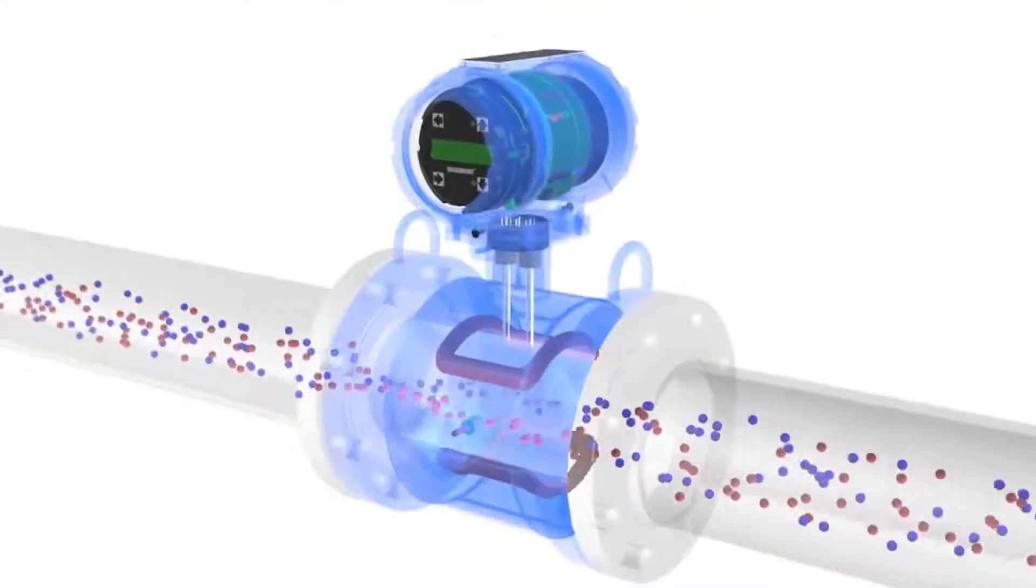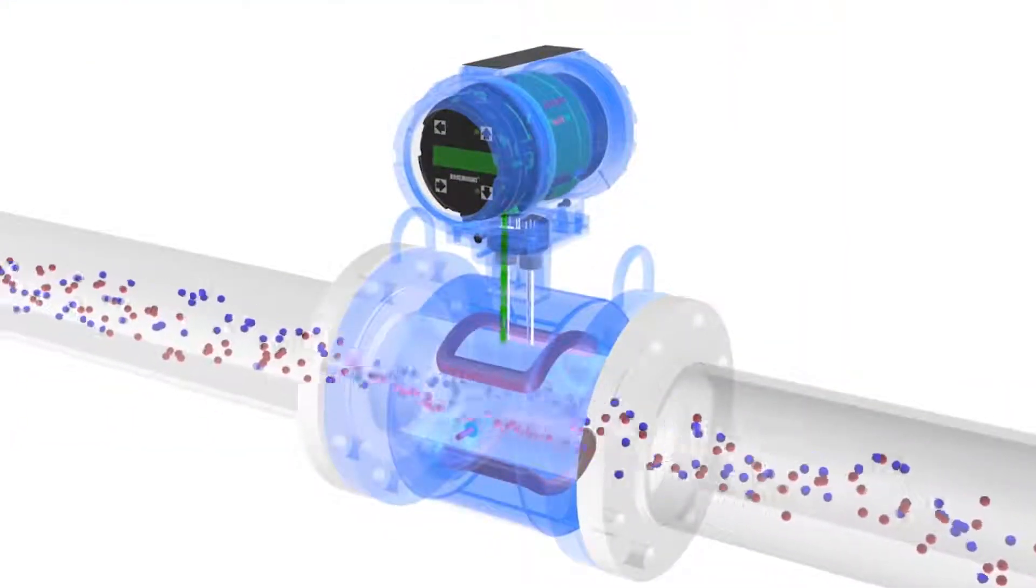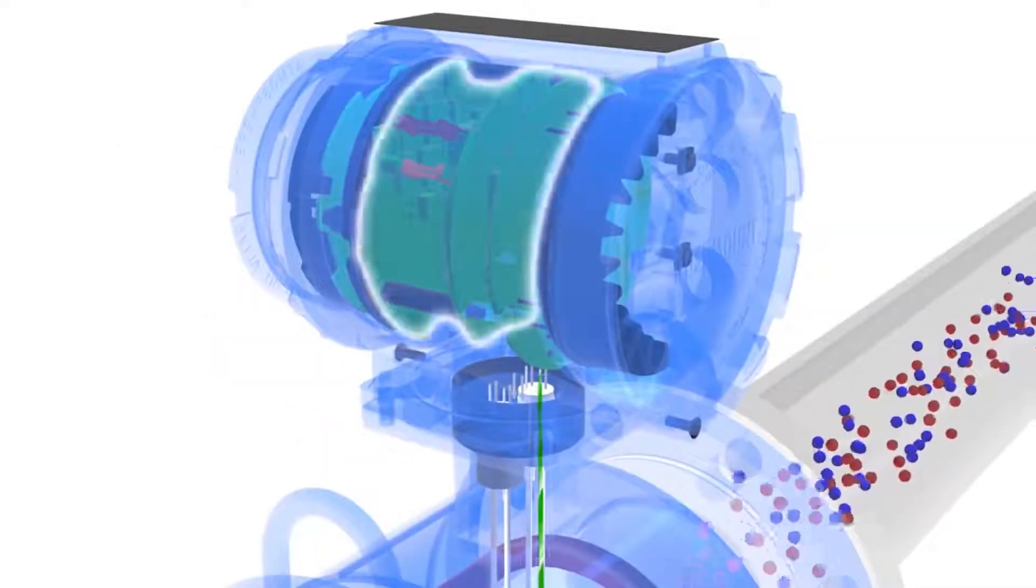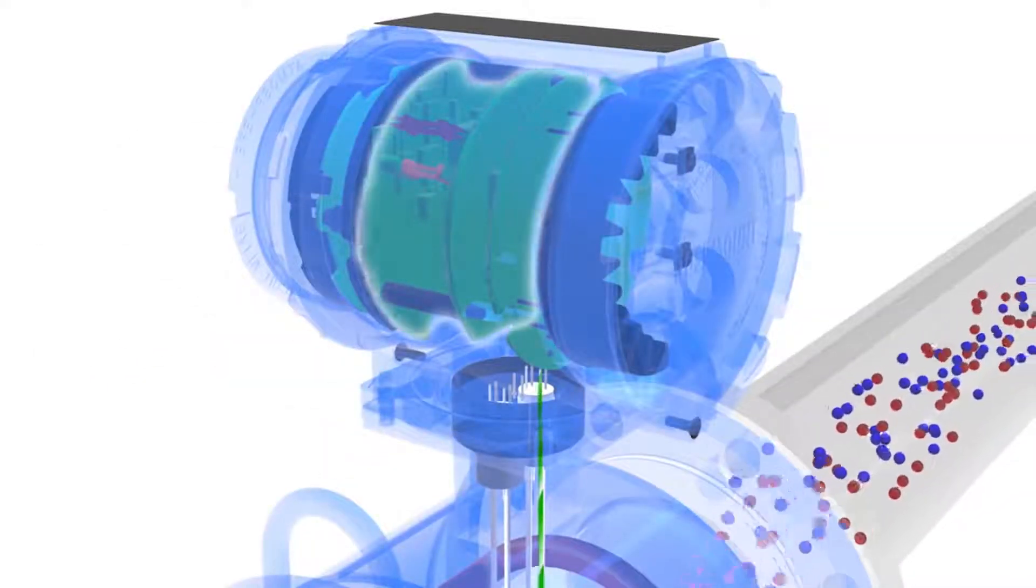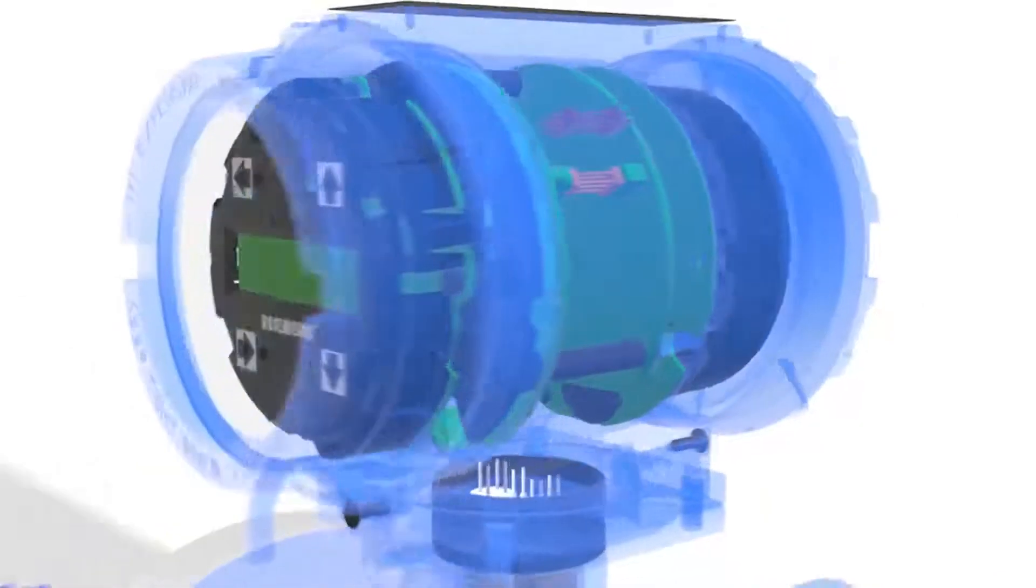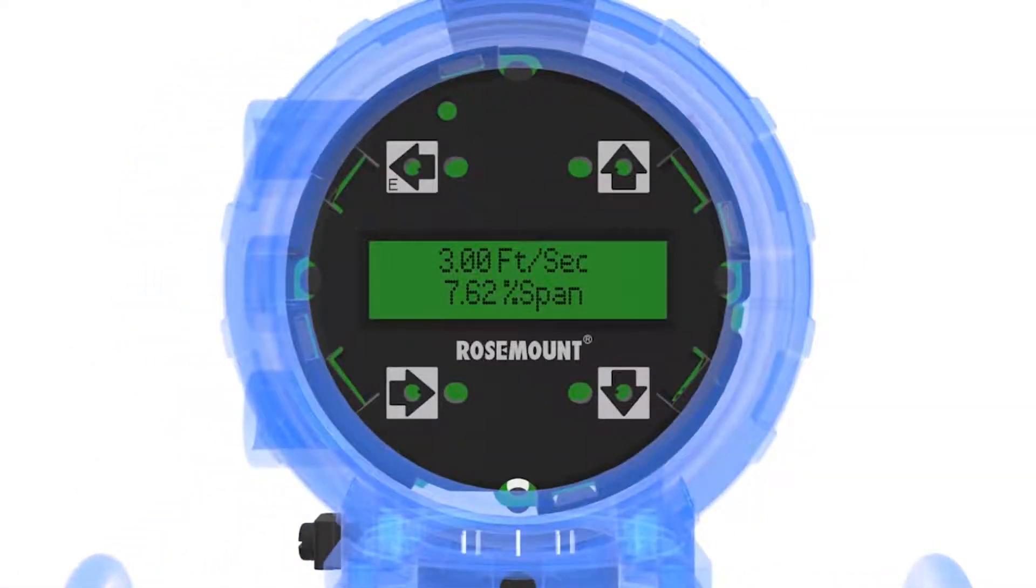The induced voltage is carried to the transmitter through the electrode circuit. The transmitter then converts this voltage into a quantifiable flow velocity. With the known velocity along with the area of the pipe, the volumetric flow rate of the fluid is calculated.